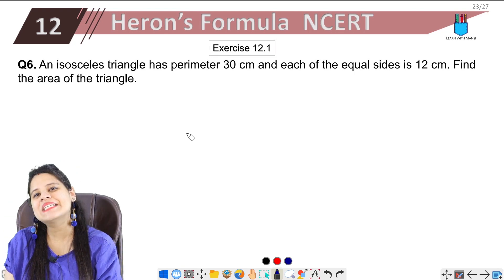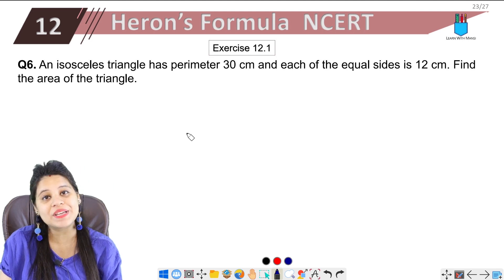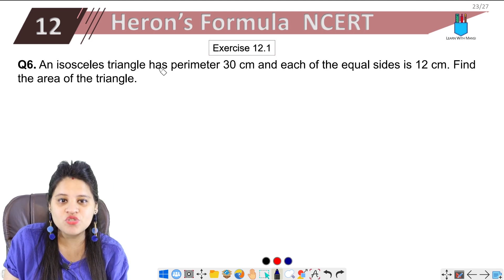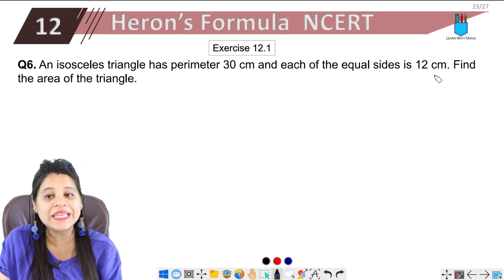Hello my lovely students, this is Mansi, welcome back to the channel. Now we're going to start with the sixth question of exercise 12.1. The question says an isosceles triangle has perimeter 30 centimeters and each of the equal sides is 12 centimeters.